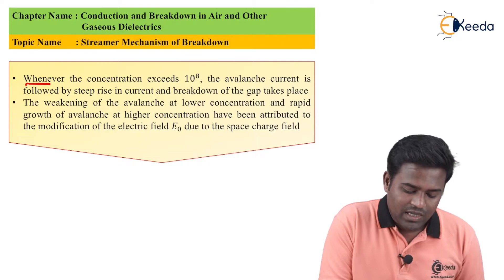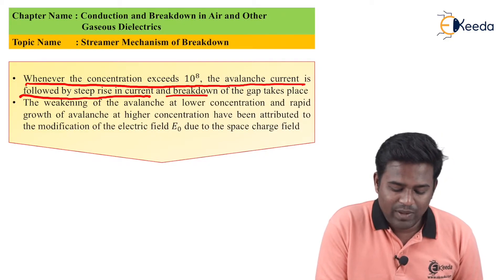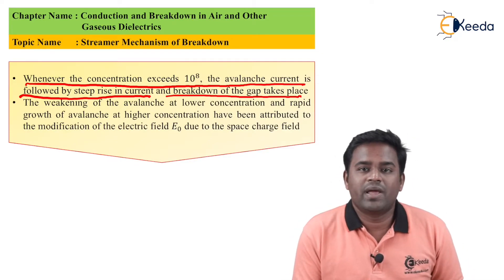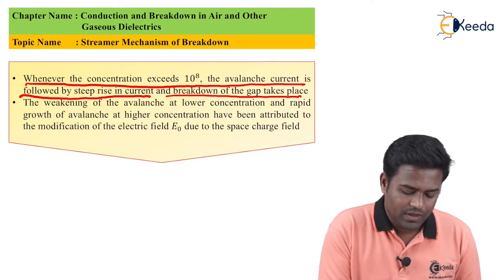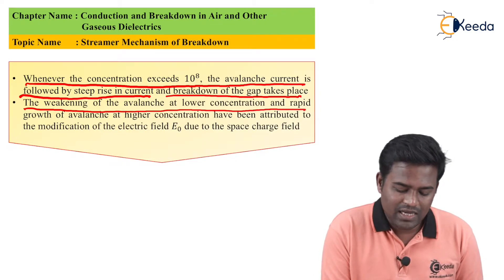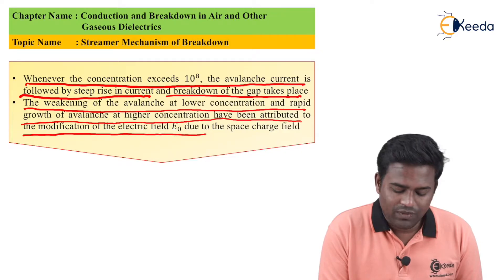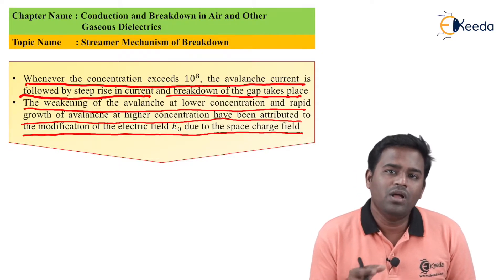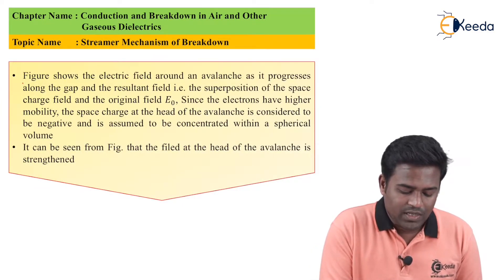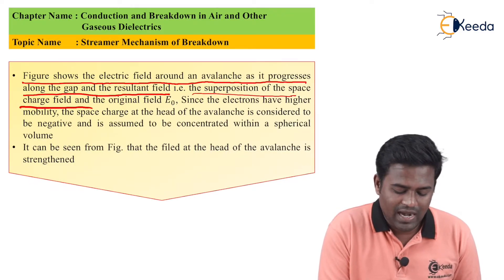Whenever the concentration exceeds 10 raised to 8, the avalanche current is followed by a step rise in current and breakdown of the gap takes place. When the avalanche reaches 10^8, the rise in current and breakdown will happen more rapidly. The weakening at lower concentration and rapid growth at higher concentration have been attributed to the modification of electric field E0 due to the space charge field. The figure shows the electric field around an avalanche as it progresses along the gap and the resultant field — that is, the superposition of the space charge field and original field E0.